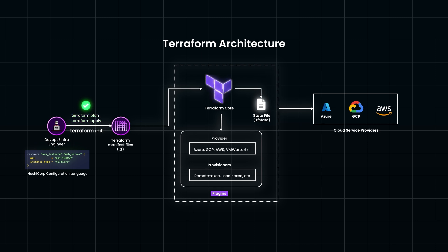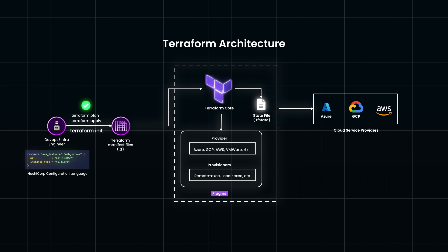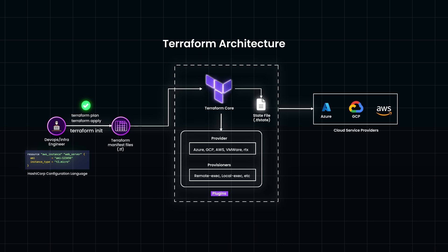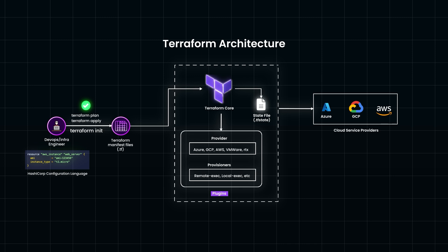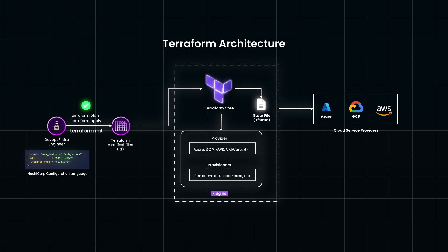Once you are happy with the plan, run Terraform apply to provision the infrastructure. Terraform will execute the plan and update the state file to reflect the new or changed resources. Finally, you can inspect the infrastructure state using Terraform show or Terraform state list to ensure everything is as expected. Inspecting the state regularly is important for keeping track of changes and troubleshooting.